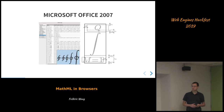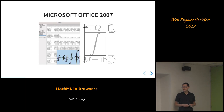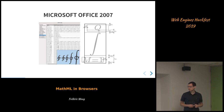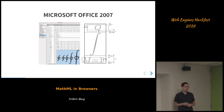Another important contribution was made by Microsoft. For Microsoft Office 2007, they added support for math layout, adding new OpenType features and OpenType tables. This was later standardized, and it allowed MathML implementations to use information from the font instead of using hard-coded tables.